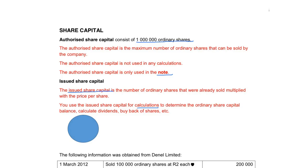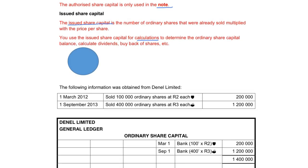Now, if we look at this blue ball, this is like a cake. This full cake is the total number of shares that the company can issue, so in this blue ball there is a million shares. If we look at the issue of shares, we will see that on 1 March 2012, 100,000 shares were issued at two rand each. That means they've taken out of this cake a slice and issued 100,000 shares.